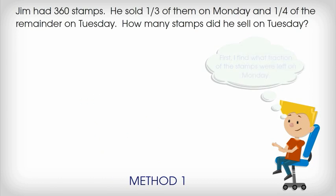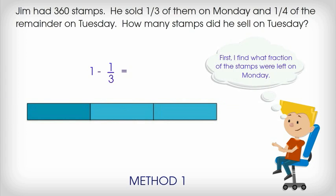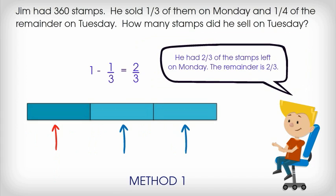First, you have to find what fraction of the stamps were left on Monday. We know that he started with all of his stamps, or one whole, and sold one third of them on Monday. Our whole bar is going to be split into three equal parts because we have a denominator of three. The shaded part is how much Jim sold, and the unshaded part is how much Jim has left on Monday. He has two thirds left.